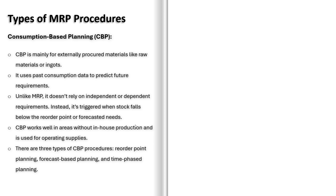Now that we've covered the three MRP procedures, let's quickly recap. MRP plans materials based on demand and generates procurement and production proposals. MPS focuses on critical items and ensures key components are always available. CBP reorders materials based on past consumption, ideal for frequently used supplies. That's all about MRP, the MRP planning process, and procedures. In our next session, we will see the configurations of MRP in SAP.